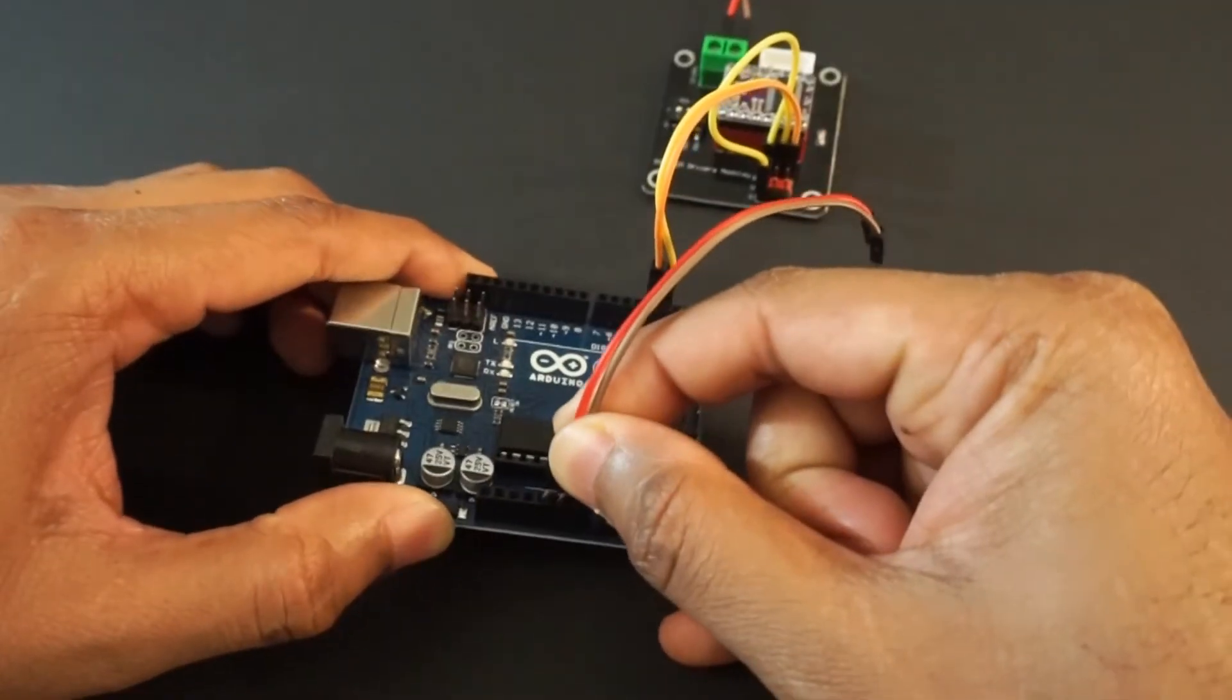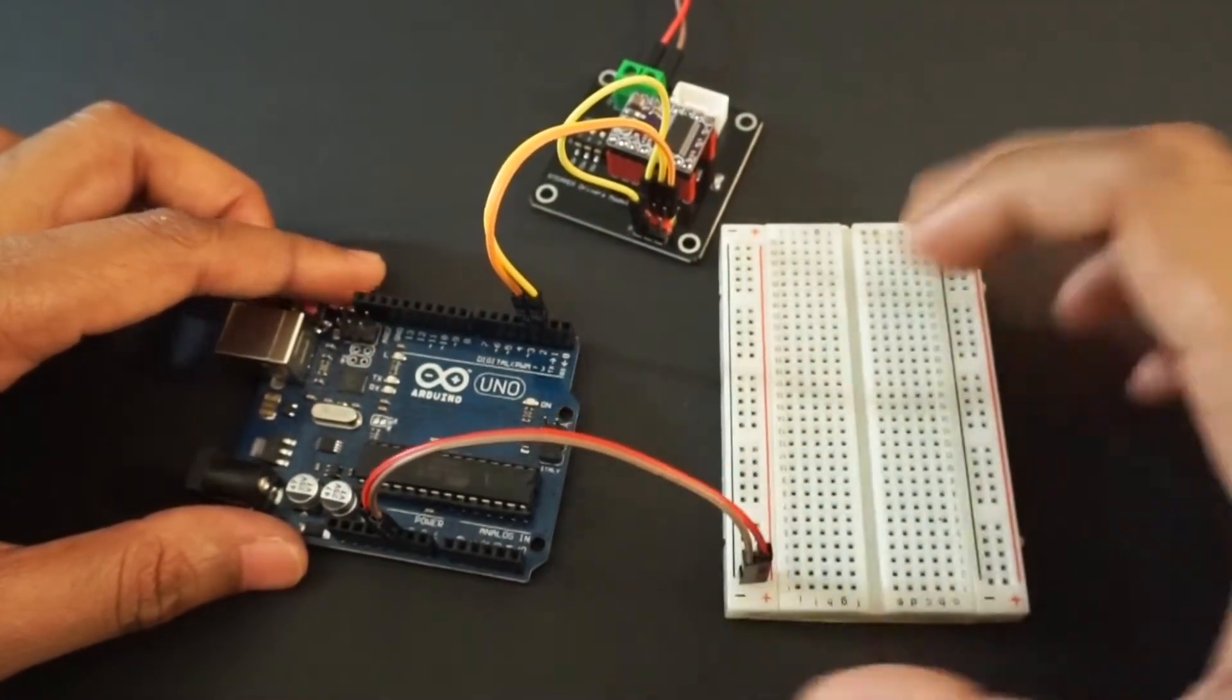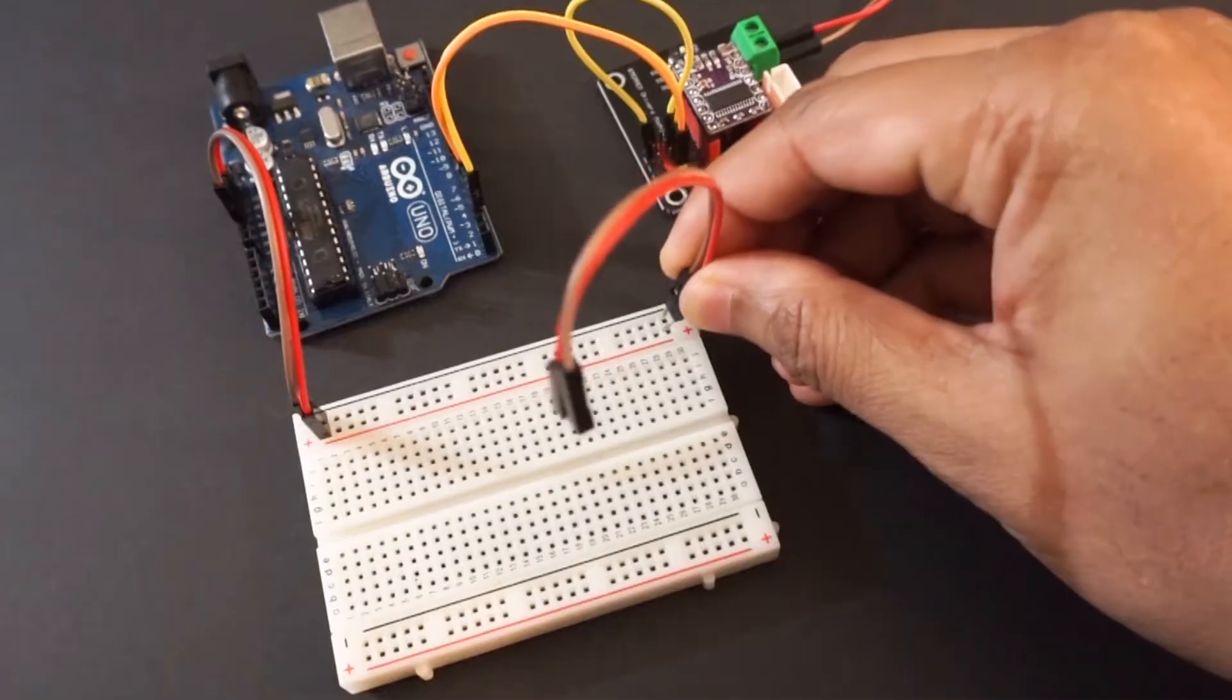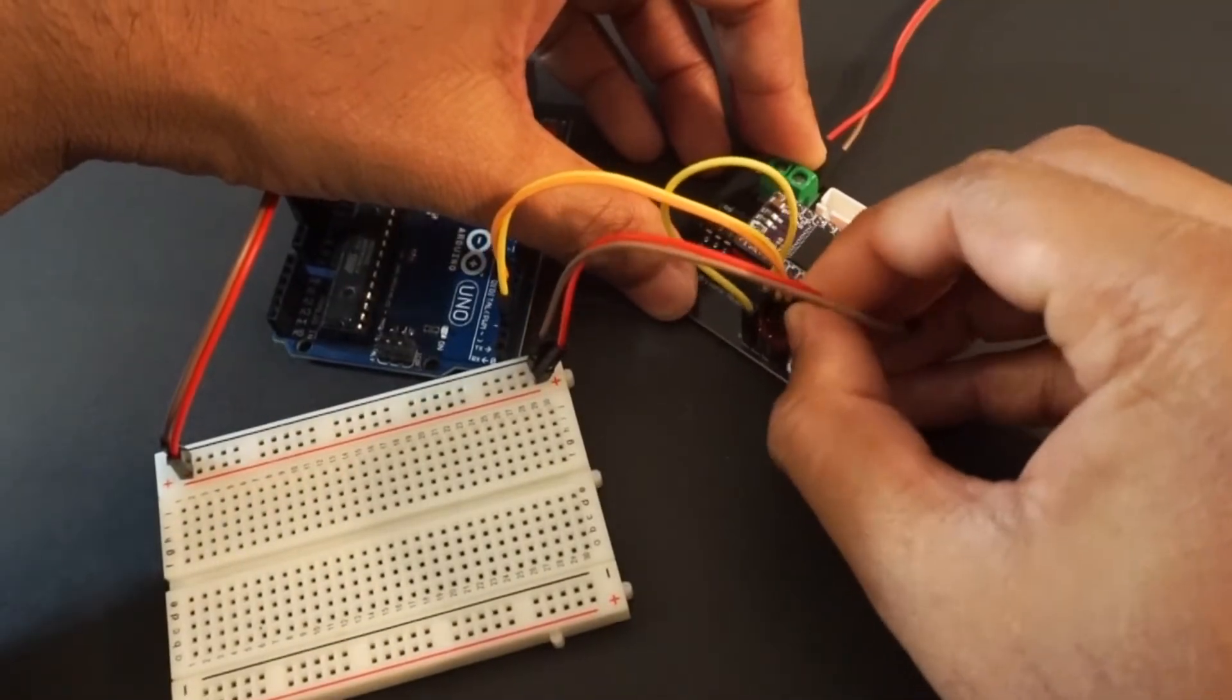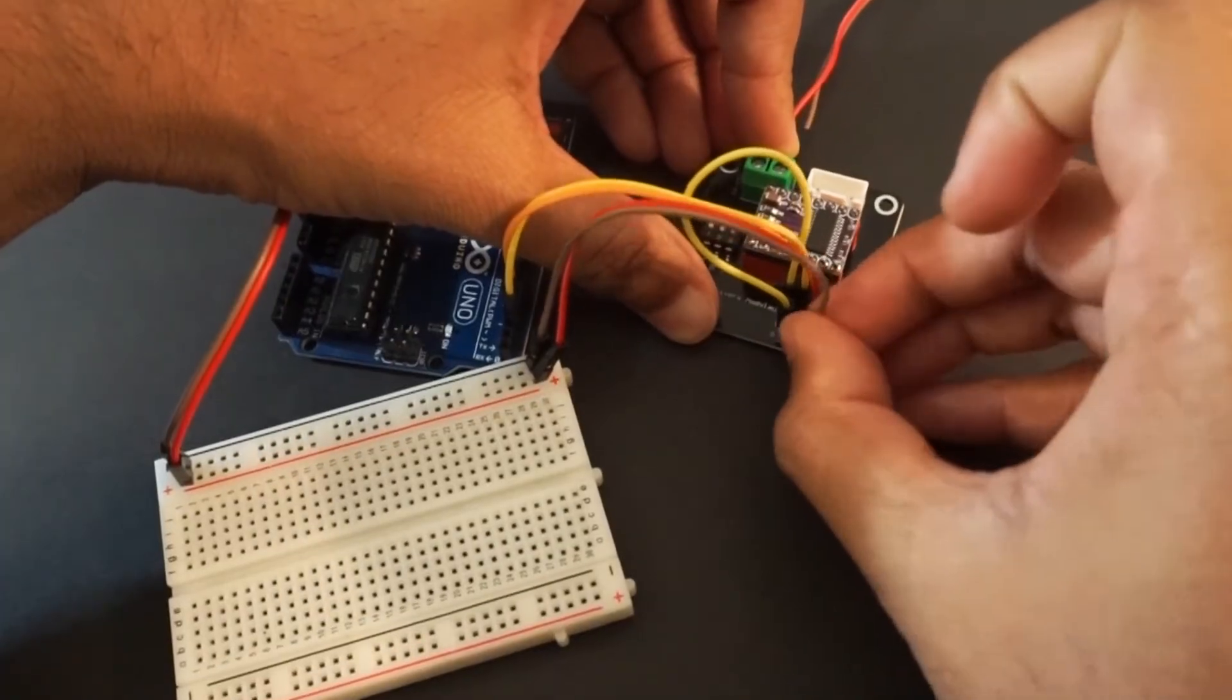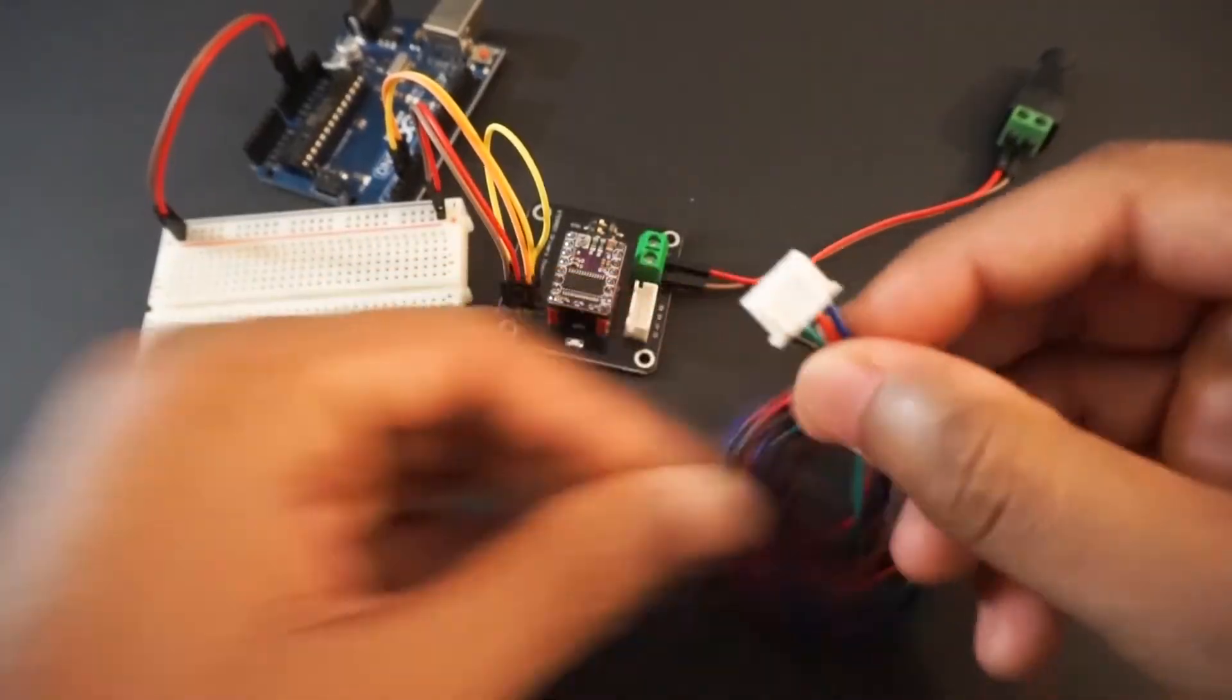Connect plus 5 volt and ground from Arduino to breadboard. Provide plus 5 and ground from breadboard to driver. Now connect stepper motor wires to adapter motor pins.